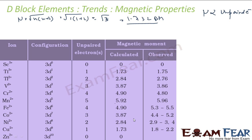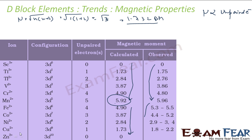There is a trend in magnetic moment: it increases from left to right — from scandium, titanium, vanadium, chromium, manganese, iron, cobalt, nickel — and then decreases toward copper and zinc. The calculated values also increase to a maximum and then decrease. This is because the number of unpaired electrons first increases then decreases across the series, so the magnetic moment also increases then decreases.